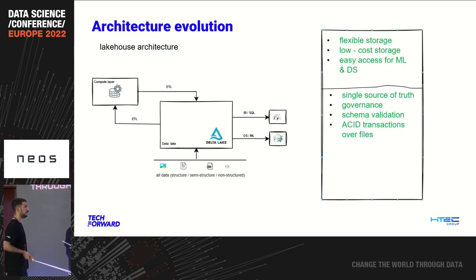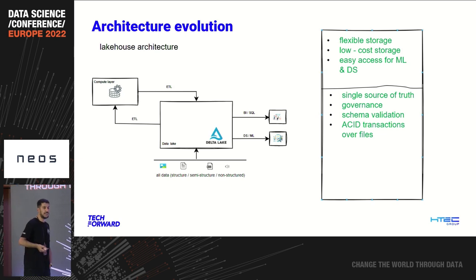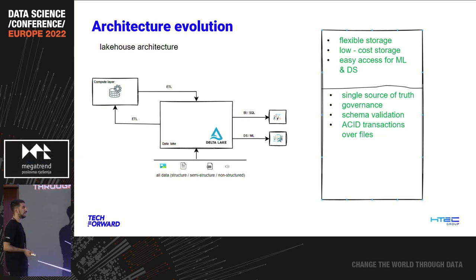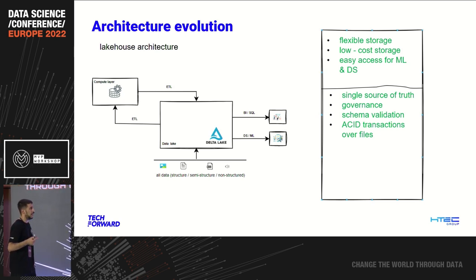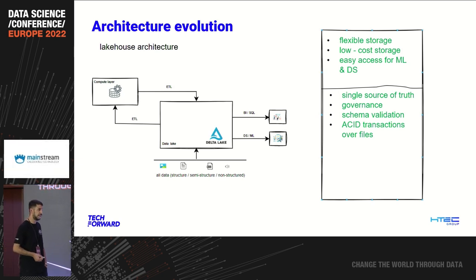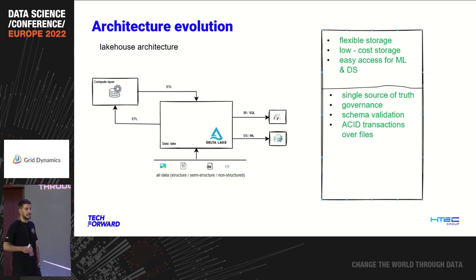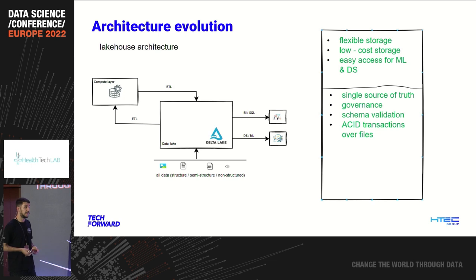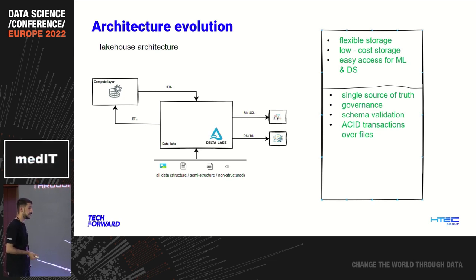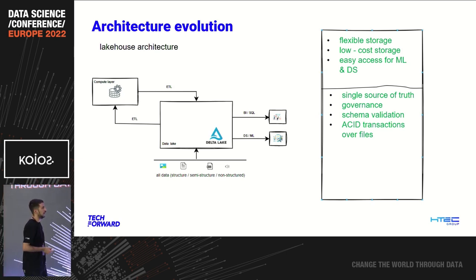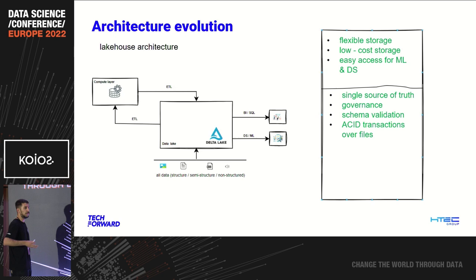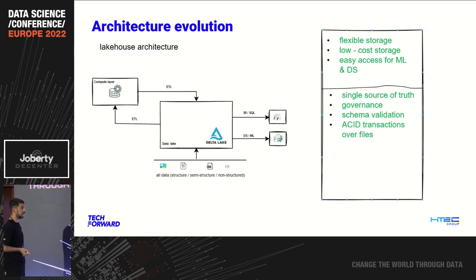The first three points are the same because we still leverage the same data lake. But what we additionally get with the lakehouse is, again, a single source of truth, governance over the data that lies in your files — not just can I read the file itself, but the data inside that file. If you have sensitive data, you can put database-level governance over data lake files. You get schema validation and techniques that Delta Lake provides to persist data quality through your pipeline. ACID transactions over files on the data lake.